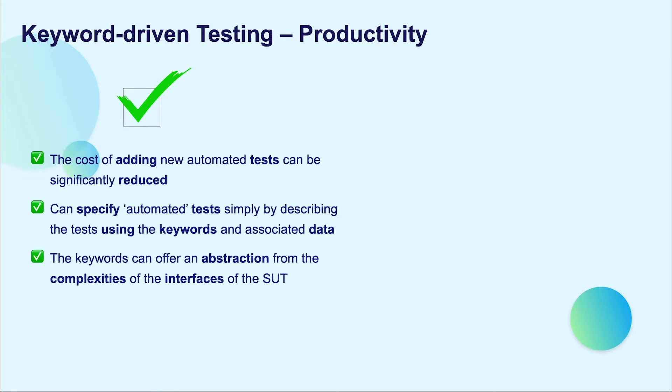The pros include the cost of adding new automated tests can be significantly reduced. Secondly, you can specify automated tests simply by describing the test using the keywords or associated data. Lastly, the keywords can offer abstraction from the complexity of the interfaces of the system under test.